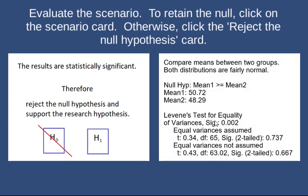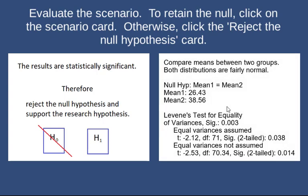For this scenario, the null hypothesis says that the mean for group 1 is larger than the mean for group 2. Looking at the evidence, the mean for group 1 is actually larger than the mean for group 2, so we don't have to look at anything else — we know we're going to retain this null hypothesis. We just click on the scenario card.